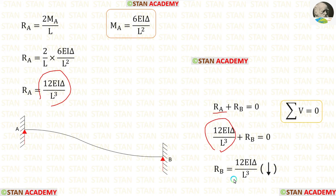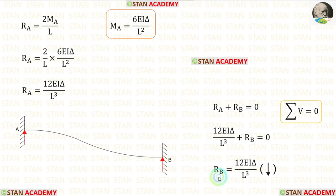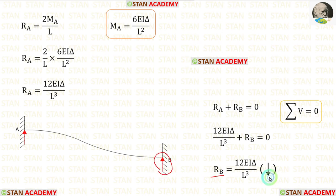Then, take it to the right side — it will come as negative. For RB, we will get a negative value. That means our assumption is incorrect. We assumed that RB is acting upwards, but actually it is acting downwards.